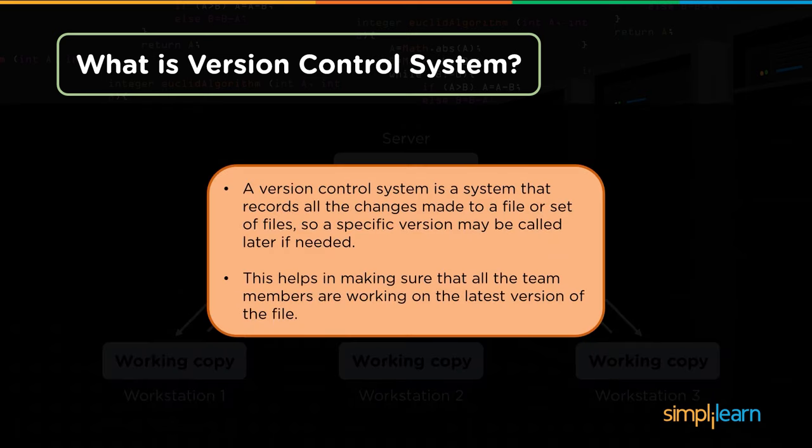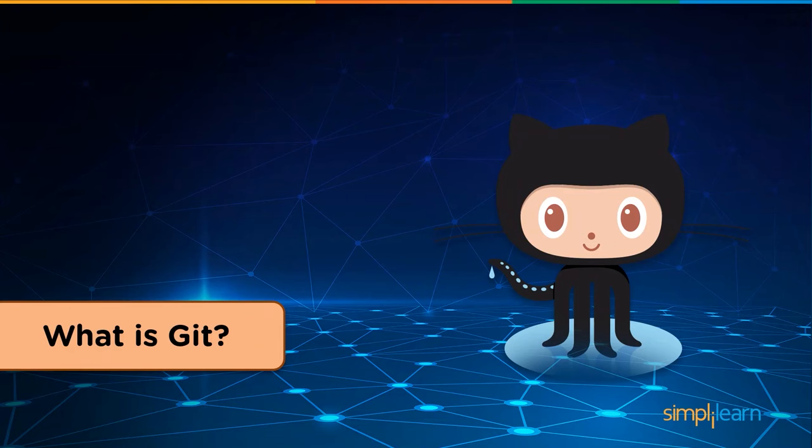The two most important things to make changes visible are: you commit and they update. It is a system that keeps track of different versions of a file, and hence a specific version of a file can be called whenever needed. This makes collaboration amongst developers easy and also allows team members to work on the latest version of the file.